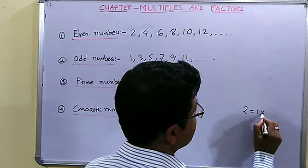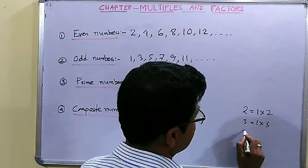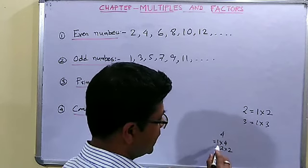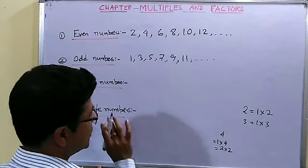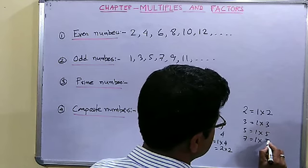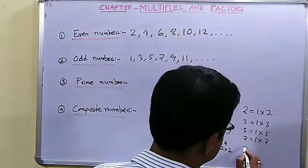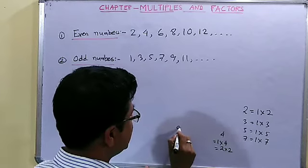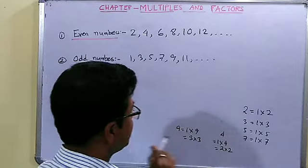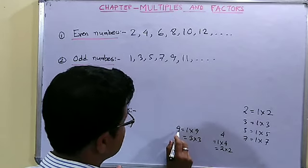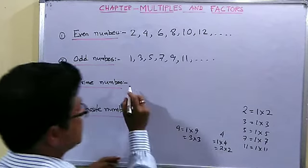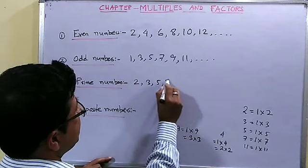Let us start with 2: 1 into 2 — so 2 factors. Then 3: 1 into 3 — 2 factors. If we take 4: 1 into 4 and 2 into 2, so it has 3 factors — we shall discuss that separately. Then 5: 1 into 5, and 7: 1 into 7. What about 9? No, 9 is not a prime number because 9 equals 1 into 9 and also 3 into 3 — so the factors of 9 are 1, 3 and 9. So odd numbers and prime numbers are not the same. Next 11: 1 into 11. So the prime numbers are 2, 3, 5, 7 and so on.